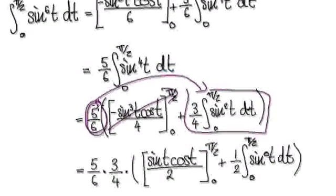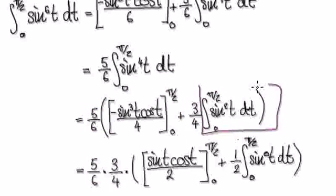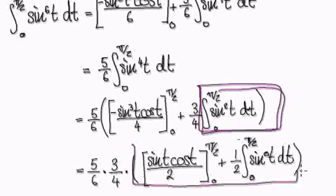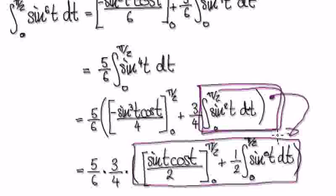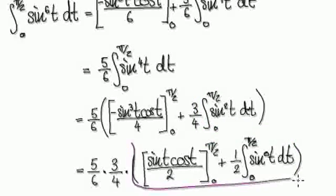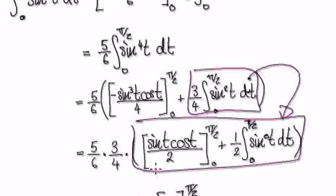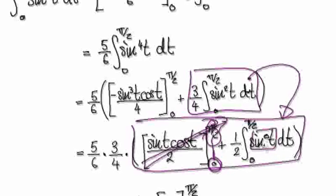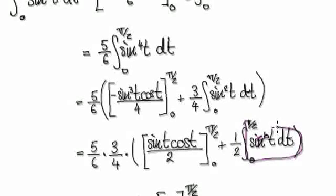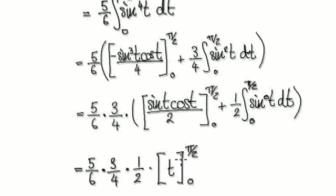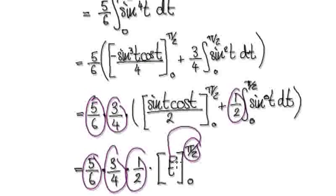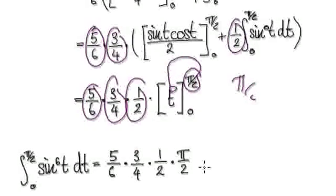That gives us 5 over 6 times 5 over 6, and now we just need to integrate sine squared. Applying the reduction formula again on sine squared gives us this. When you evaluate from 0 to pi over 2, the cosine term disappears. Sine to the power of 0 is always 1, so integrating that just gives t. Evaluating that from 0 to pi over 2 gives pi over 2.